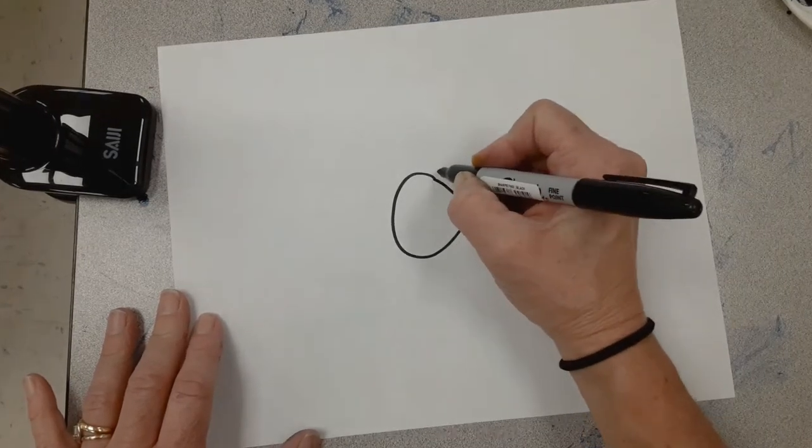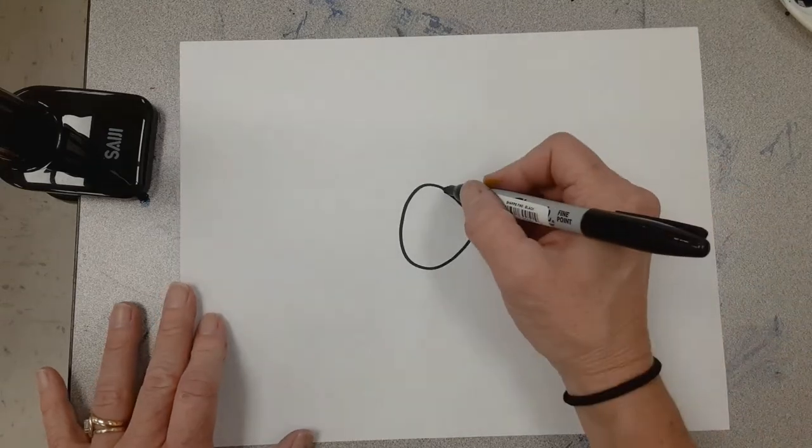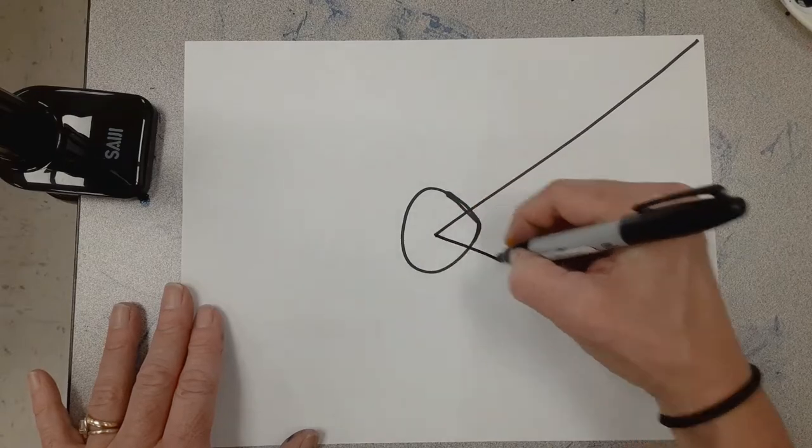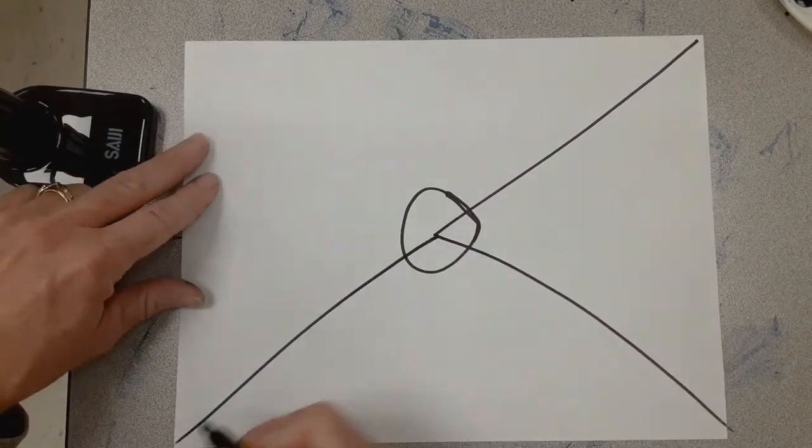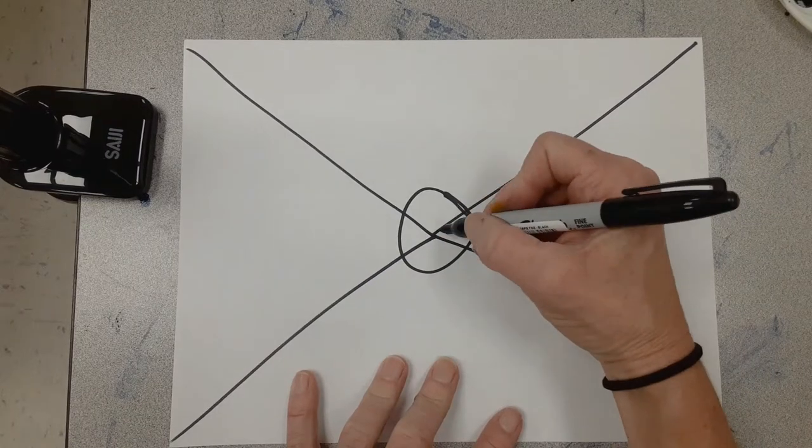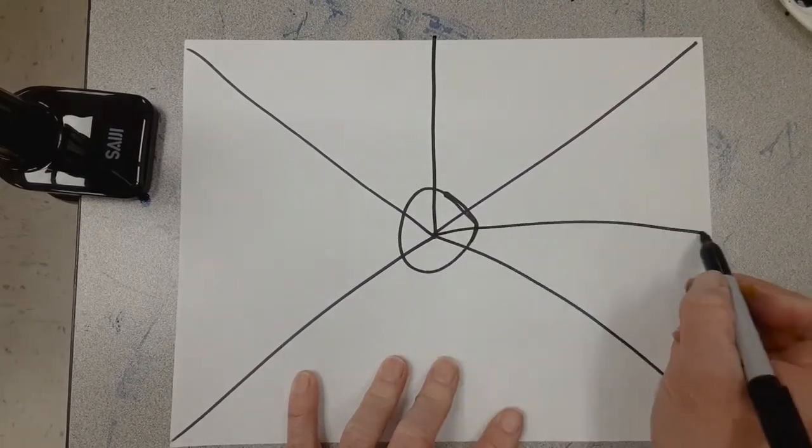So the first thing you're going to do is draw a circle in the center of your paper with the white crayon. Then you're going to go back to the center of the circle and you're going to draw a line to each corner and straight off your page with your white crayon.